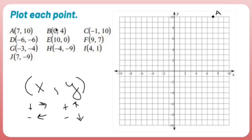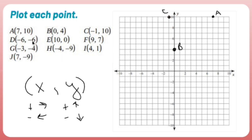B is (0, 4): don't move, go up 4. Start at the origin, up 4 — that's B. C is (-1, 10): go left 1, up 10 all the way — that's C. D is (-6, -6): go left 6, down 6 — that's D. E is (10, 0): go right 10 and don't move — that's E.